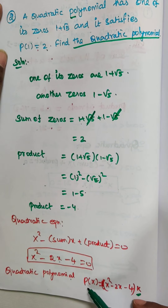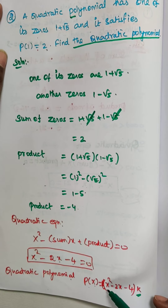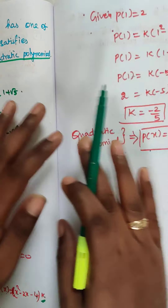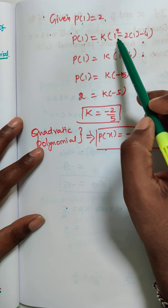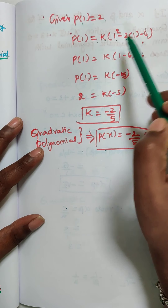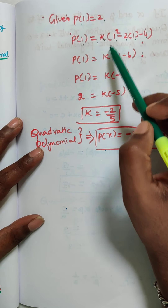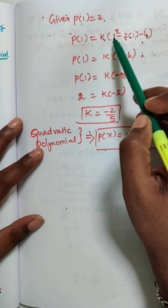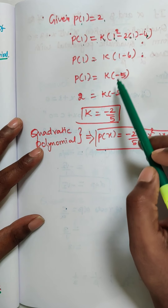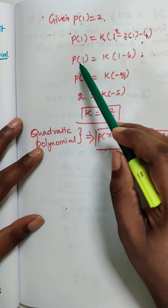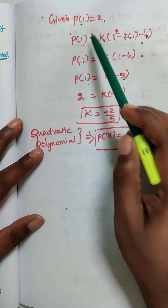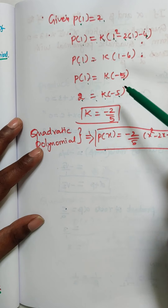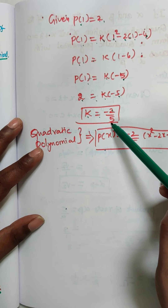So we substitute: P of 1 is equal to k into 1 square minus 2 into 1 minus 4. That gives k into 1 minus 2 minus 4, which is k into minus 5. Since P of 1 equals 2, we have 2 equals k into minus 5. Therefore k equals minus 2 by 5.